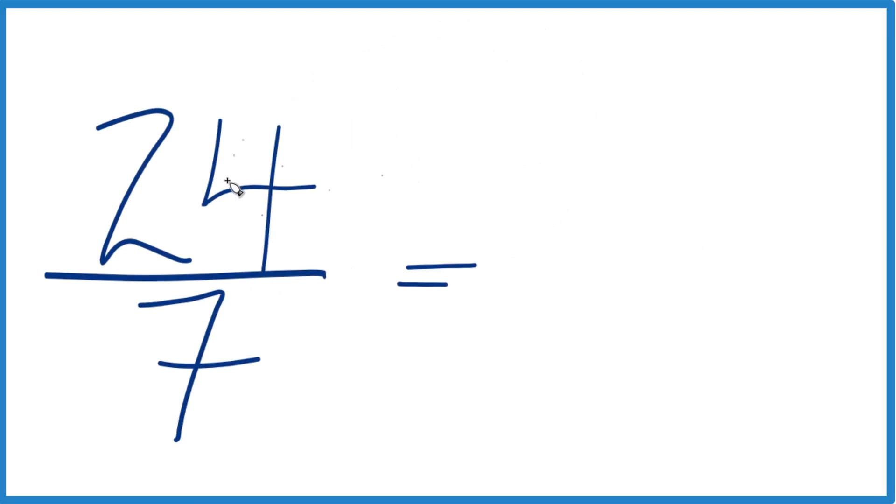7 goes into 24. 7 times 3, that would be 21 with 3 left over. Then we bring that 7 across there. And 24 7ths equals the mixed number 3 and 3 7ths.